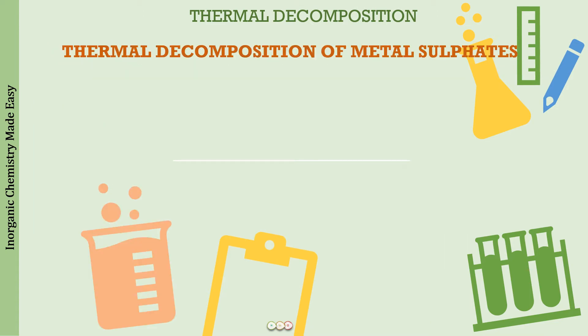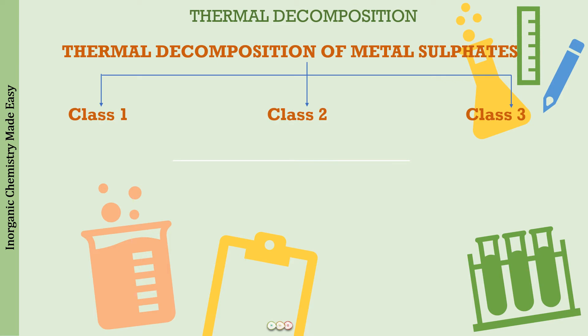Now we come to thermal decomposition of metal sulfates. To make learning simple, we classify the metals into three types — Class 1, Class 2, and Class 3 — just as we have done in previous lectures on carbonates, hydroxides, and nitrates. We learn just one type of reaction for each class and know what happens to all metals in that class. This makes the study very easy.